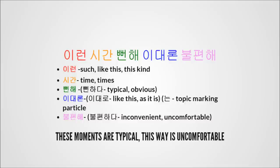The first sentence we have here is 이런 시간 뻔해, 이대론 불편해. The first word we have is 이런, which means 'this kind,' 'like this,' or 'such.' The yellow word is 시간, which means 'time.' And the green word is 뻔해, which is the informal present tense conjugation of 뻔하다, which means 'to be typical or obvious.'